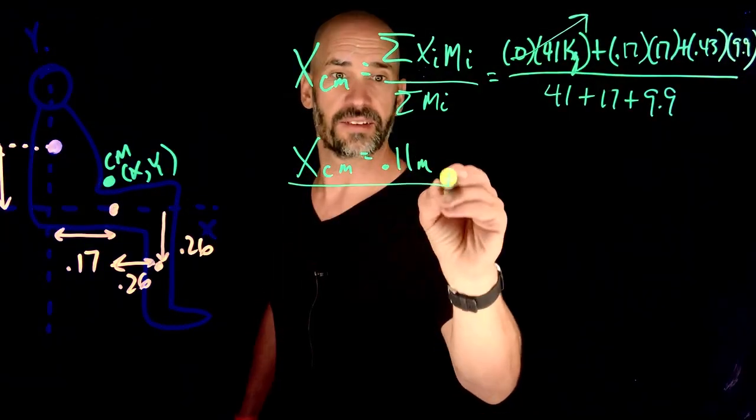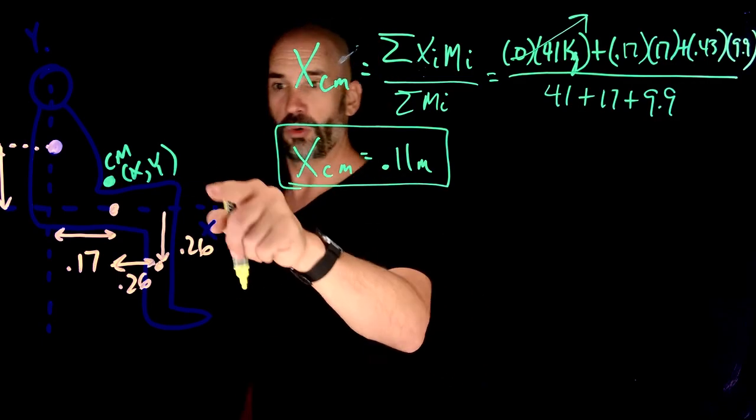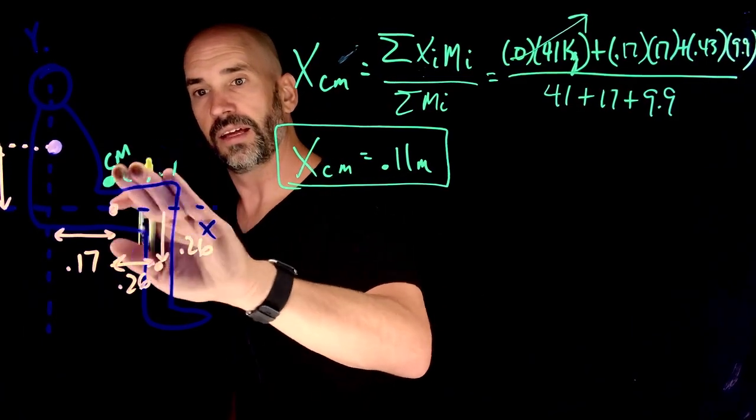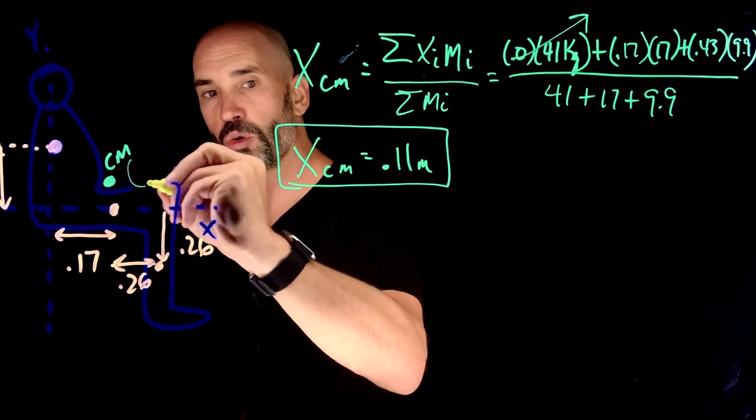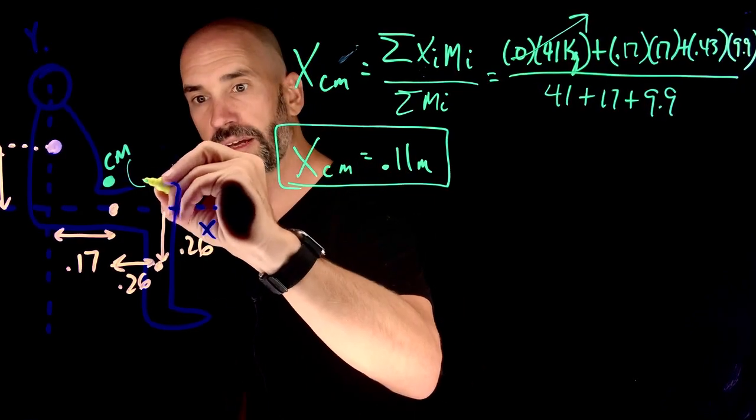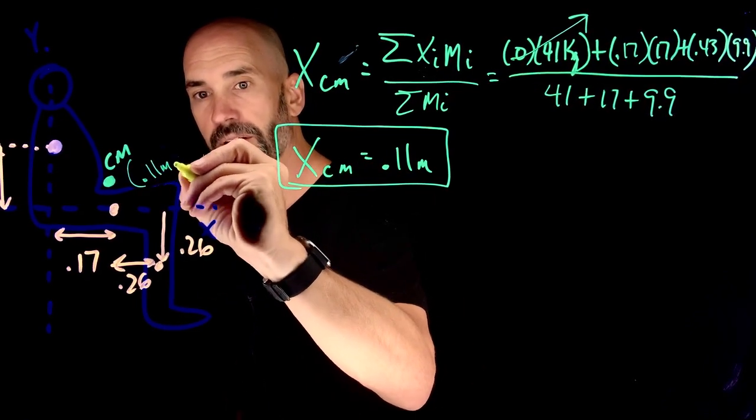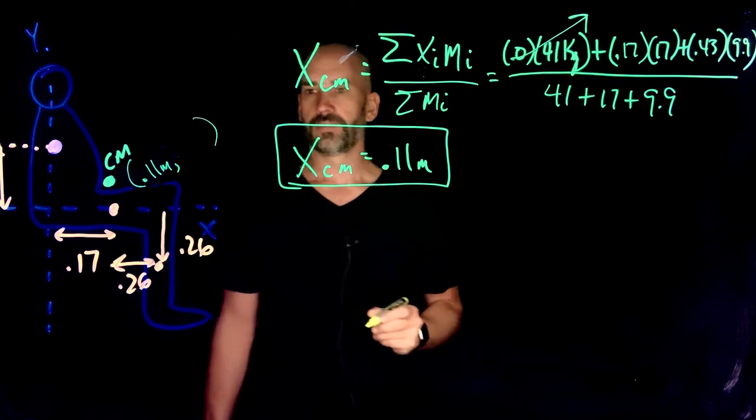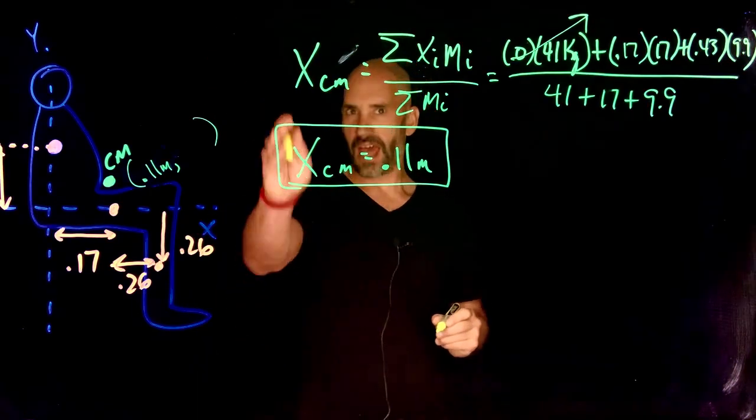That means that the coordinate of my x center of mass is going to be, if I put all that in, I get 0.11. Tell me if you get something different. Essentially, that's 11 centimeters. So that is going to be our x coordinate. In other words, if our center of mass has two coordinates, the x coordinate is 0.11 meters. Halfway there.